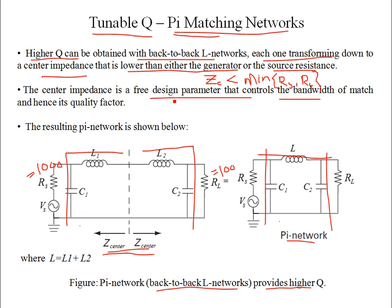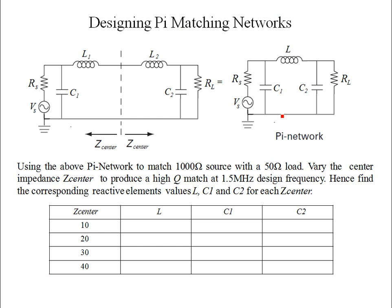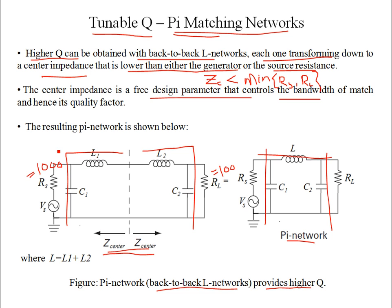The key difference with the pi network is that in a simple L network you have no free design parameter — you just transform 1000Ω to 10Ω with no choice. But in the pi network, combining two L networks gives you a free design parameter: the center impedance. Each L section transforms down to this center impedance.